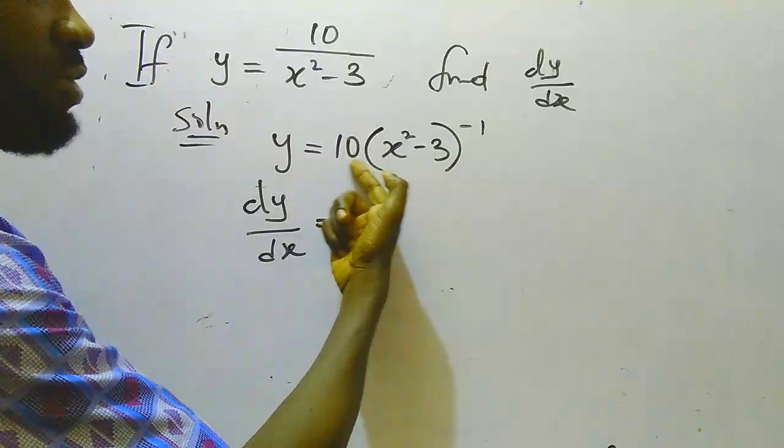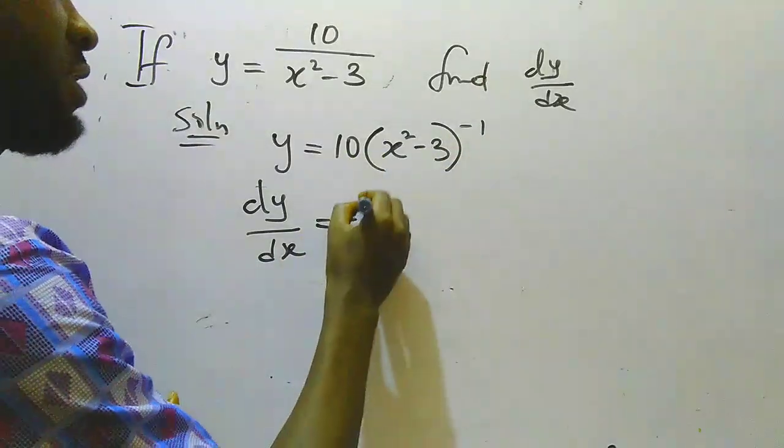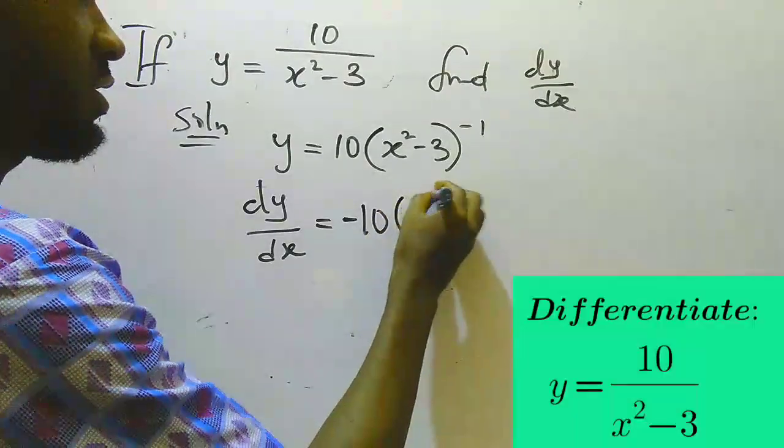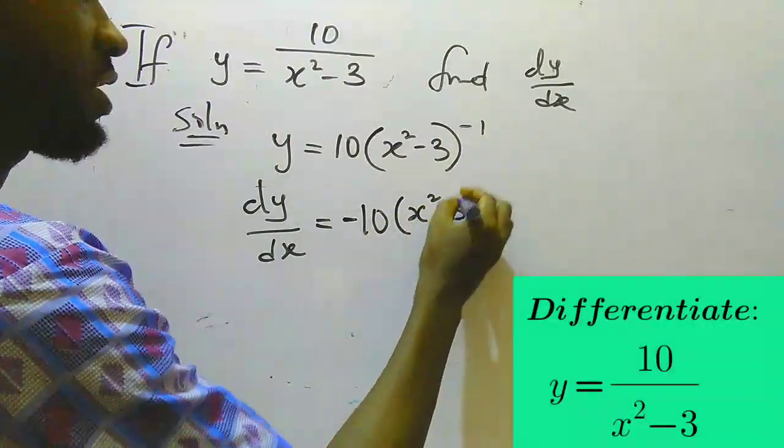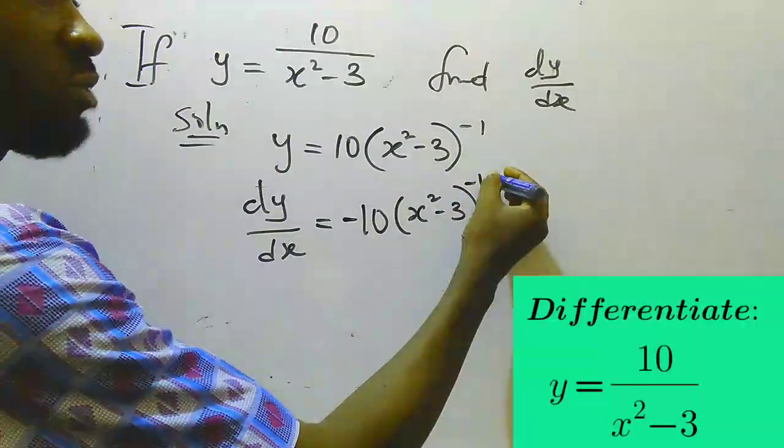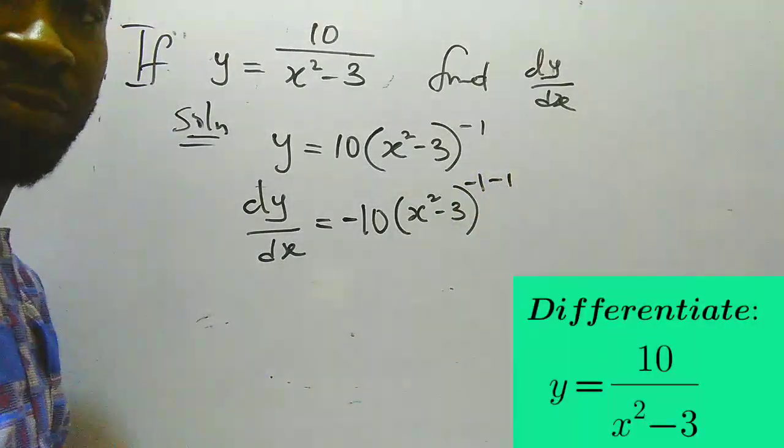Minus 1 times 10, that gives us minus 10. Then I'm going to write back this term inside the bracket. And then my second step is that I'm going to subtract 1 from the power.